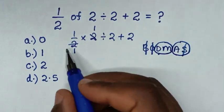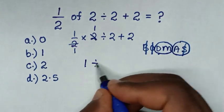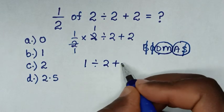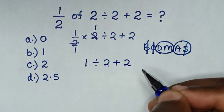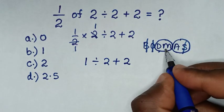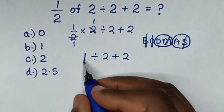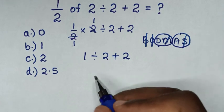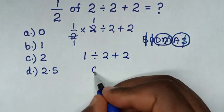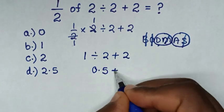Then divide by 2 plus 2. Now after we deal with multiplication, we deal with this division of 1 divided by 2. It is a half or 0.5, then plus this 2.